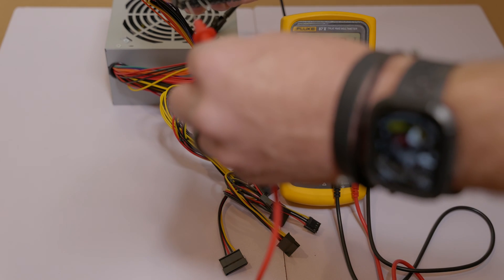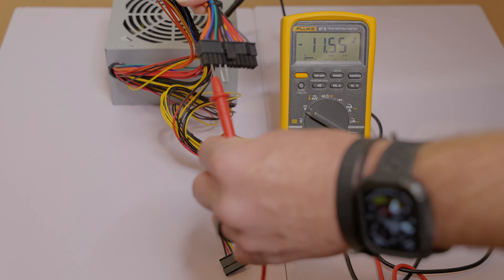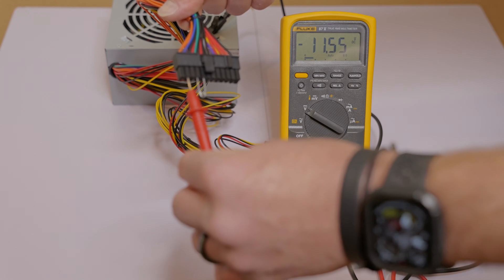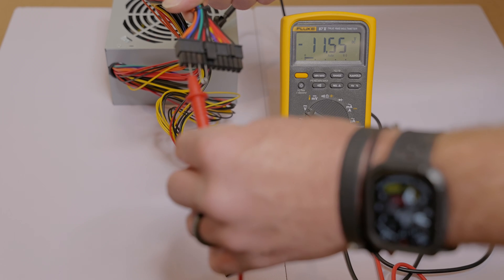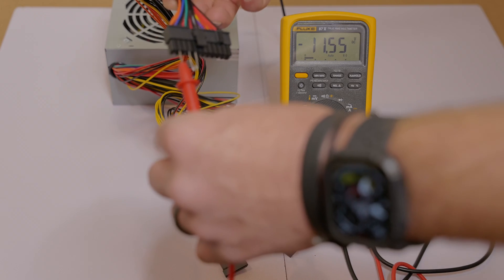Next, I'll move on to the blue wire. And as you can see there on my blue wire on the 24-pin power cable, I have 11.55 volts DC and that's negative. So that's negative voltage on that blue wire.